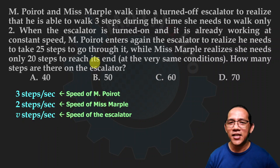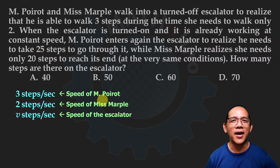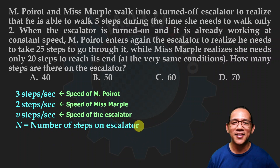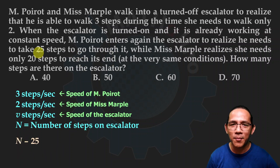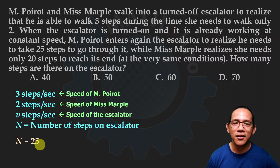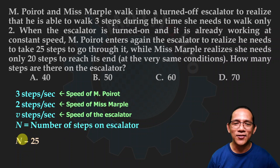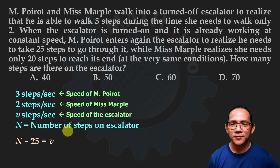M. Poirot needs 25 steps to reach the top. Let's call n the total number of steps on the escalator — that's what the question asks. So Poirot made 25 steps, meaning the steps he did not make are n minus 25. Those n minus 25 steps were done by the escalator for him. So: n minus 25 equals the velocity of the escalator times time. That is our distance relationship, where the unit of distance is steps.